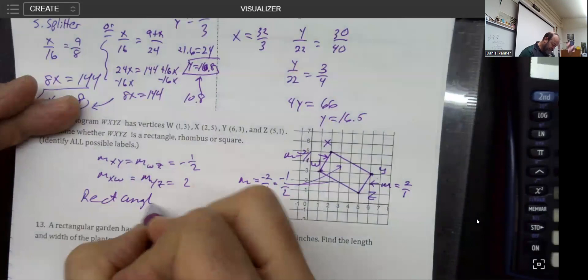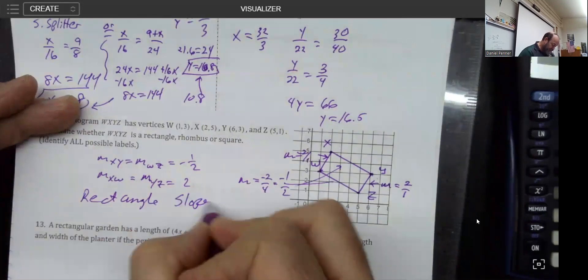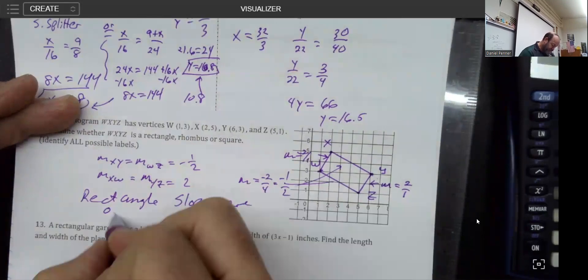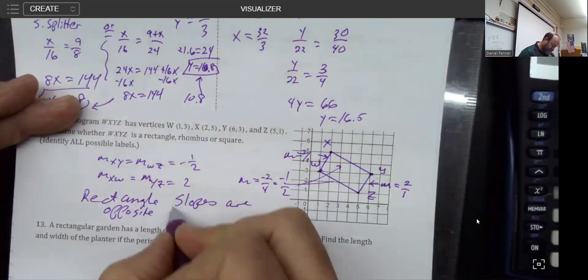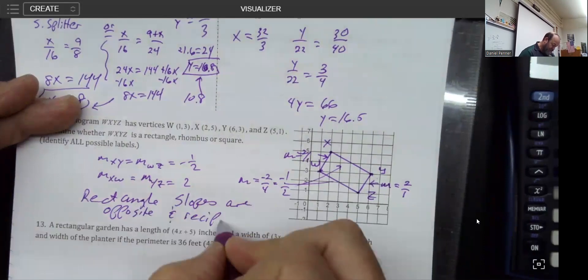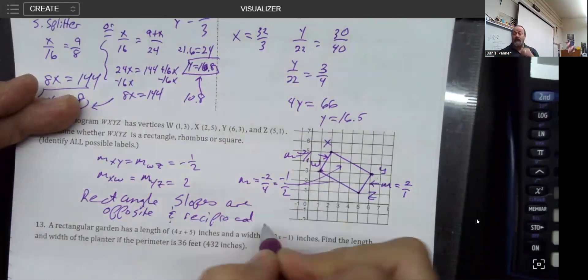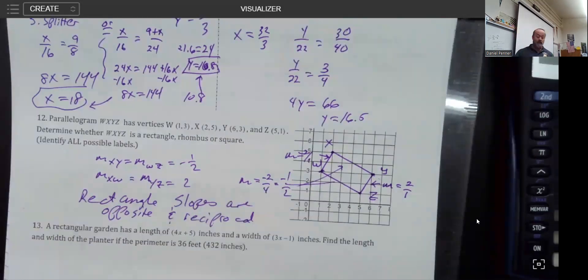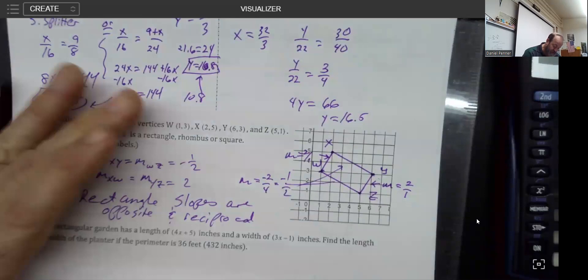Because the slopes are opposite and reciprocal. So that establishes that it has to be a rectangle because all of these angles, because of their slopes, have to be 90 degrees.